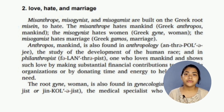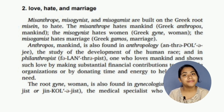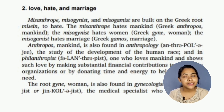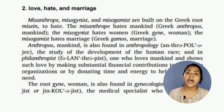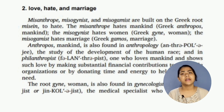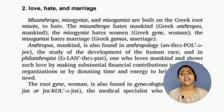Misanthrope, misogynist, and misogamist are built on the Greek root 'miso,' meaning to hate. The misanthrope hates mankind, the misogynist hates women, and the misogamist hates marriage. 'Anthropos' means mankind. Anthropology is the study of the development of the human race.